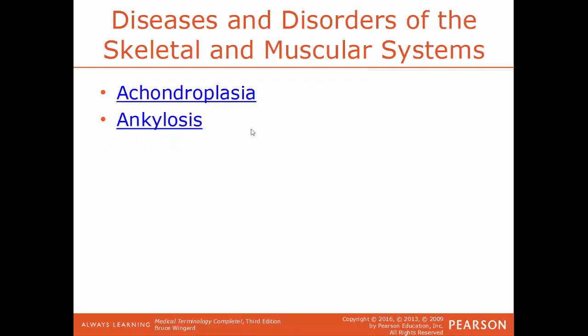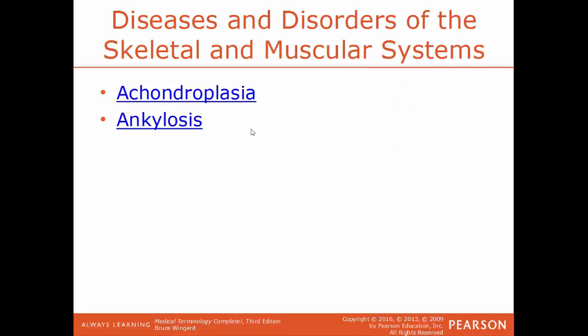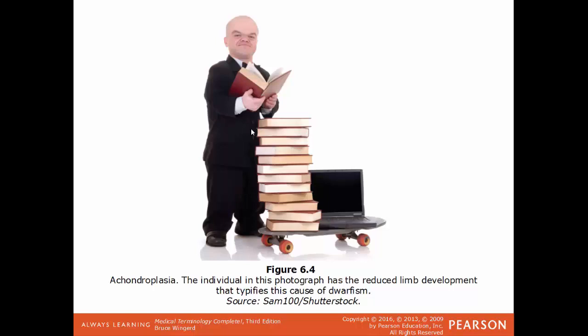Specific diseases and disorders: achondroplasia — A means without, chondro means cartilage, plasia means formation — so this is the condition of without cartilage formation, leading to very short stature and a type of dwarfism. Ankylosis is a condition of abnormal stiffness or inability to move a joint due to bones fusing incorrectly. Due to the lack of cartilage in achondroplasia, the limbs are much shorter than they should be.